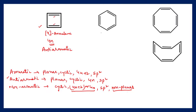For [6]-annulene, which is benzene, this compound is planar, cyclic, all carbon atoms are sp2 hybridized, and it is following the 4n+2 rule. So this compound is aromatic in nature.